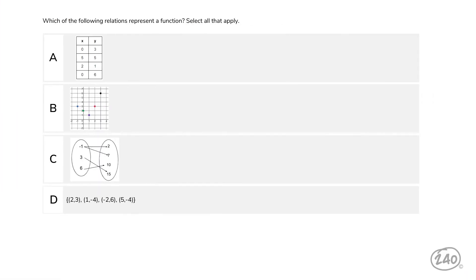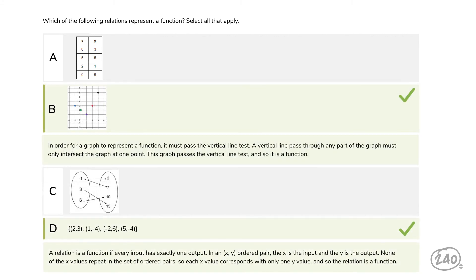Next up is functions. Which of the following relations represents a function? Remember, in order for a number set to be a function, there can only be one output for every input — or in other words, the x value can't repeat. Looking at choice A, there are two zeros in the x column, so it is not a function. In the next choice, each plotted point has a different x value, so it is a function. Then the input of negative 1 is connected to both 2 and 7, meaning it is not a function. Finally, choice D has no repeating x values, so it is a function. So choices A and C are not functions, but choices B and D are functions.